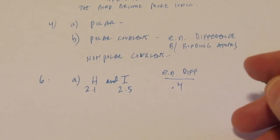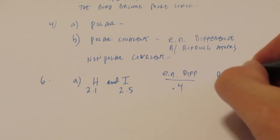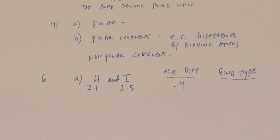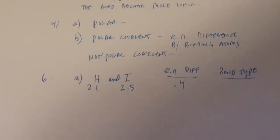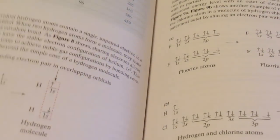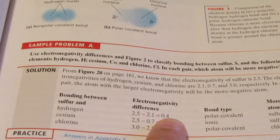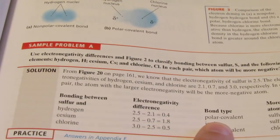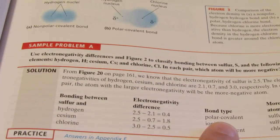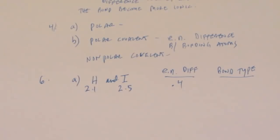The second part of the question asked for the probable bond type. I'm going to look at sample problem A to give me a little guidance. Just to show you how to use your book, we're going to flip over to section one and find sample problem 1. The electronegativity difference is 0.4, just like the one we're doing right now, and it says that is polar covalent. So we have an electronegativity difference — we will call it polar covalent.